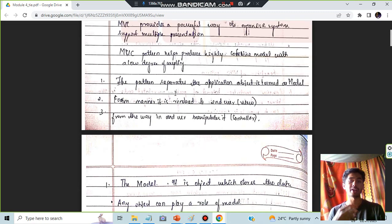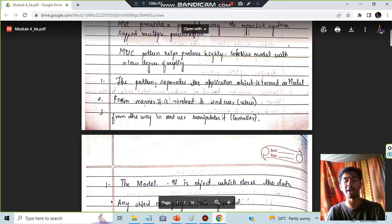Now you have to define some things about the model. What is the model? The pattern that separates the application object is termed as model. The pattern which separates the application object is called as a model.